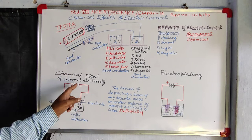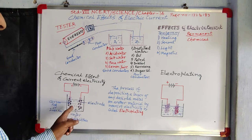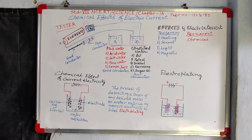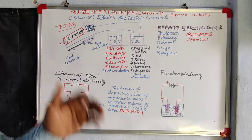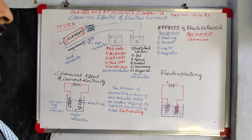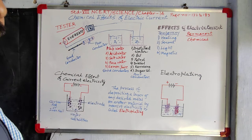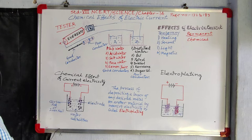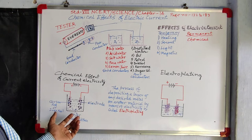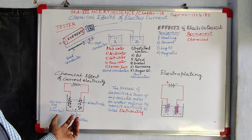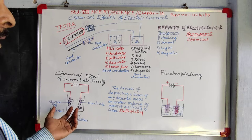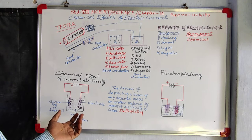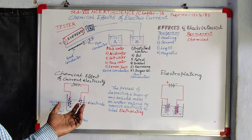If you disconnect the circuit, the gas bubbles will not vanish — they will be there permanently. The gas bubbles will slowly come up. The solution will not come back to its original position; whatever changes took place will permanently remain in place. This is a chemical effect.